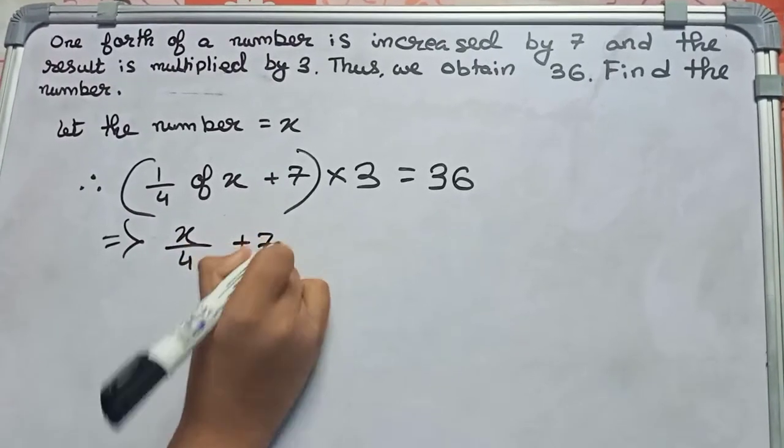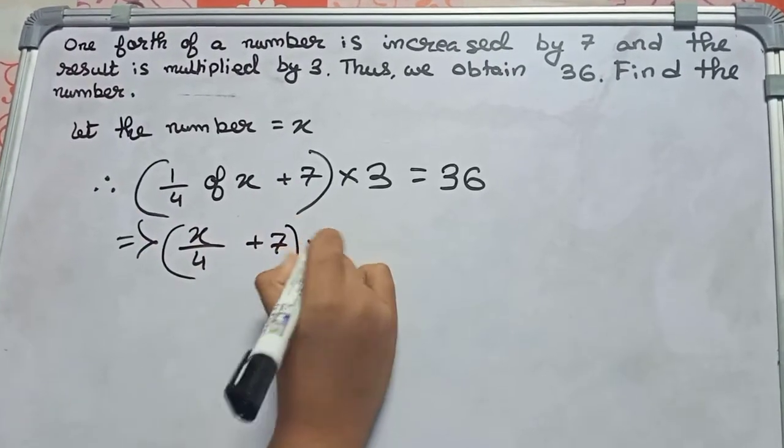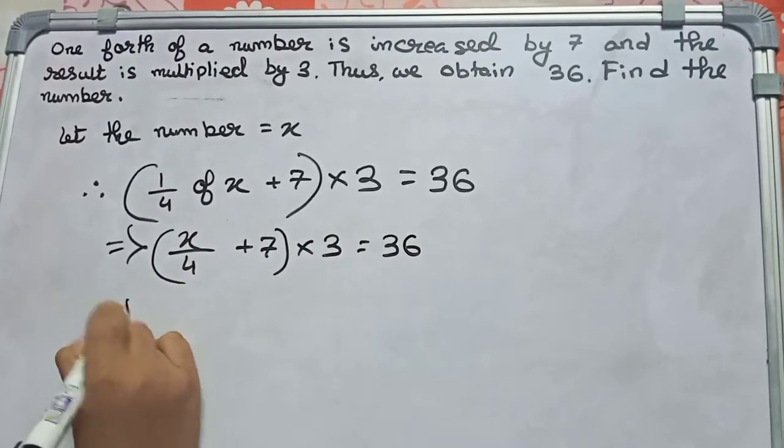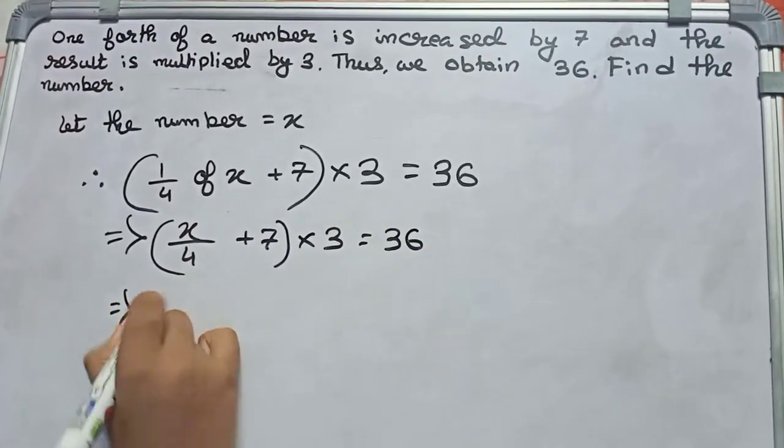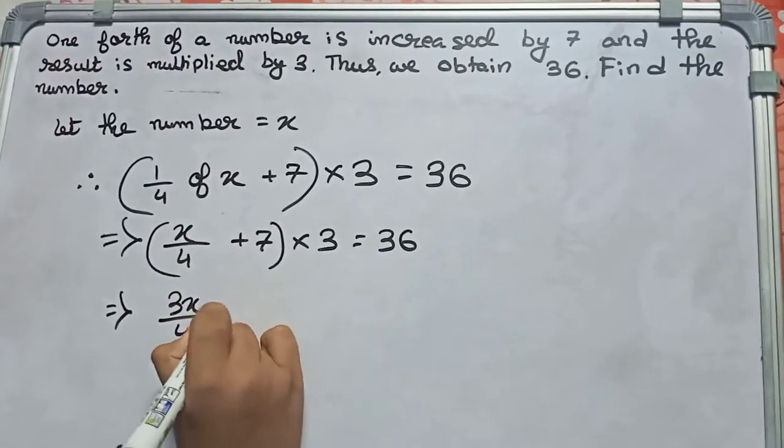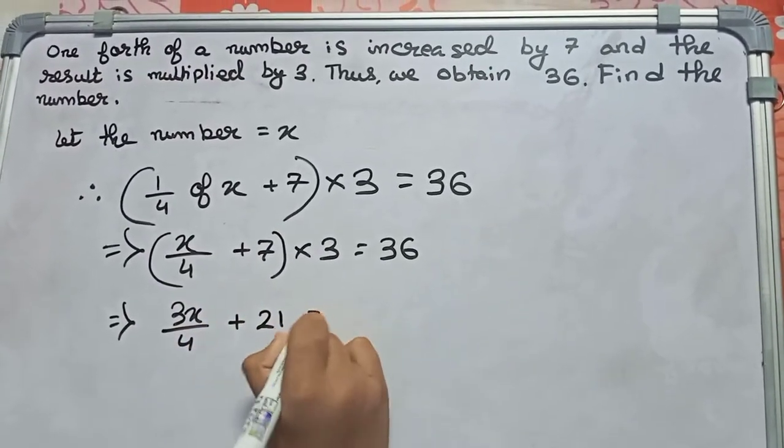Now x/4 into 3 becomes 3x/4, and 3 into 7 becomes plus 21 equals 36.